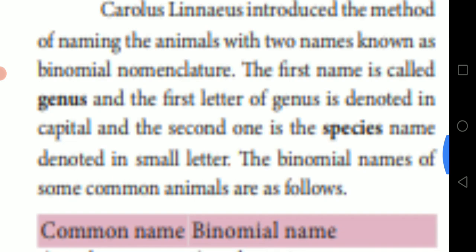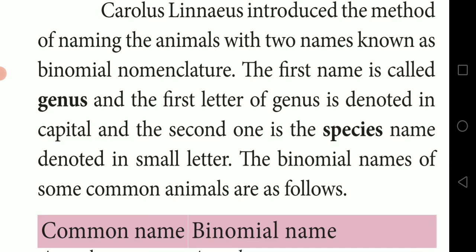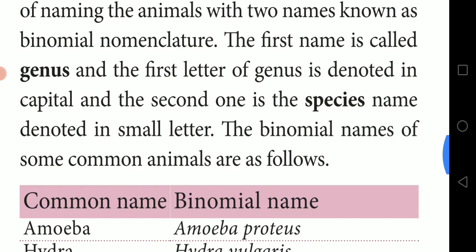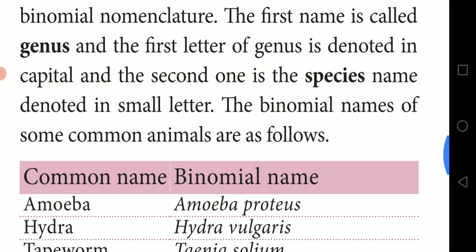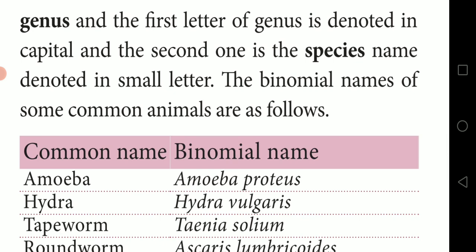The first name is called genus. The first letter of the genus name is written in capital letters. The second name is the species name, which is denoted in small letters — the first letter of the species name should start with a small letter.